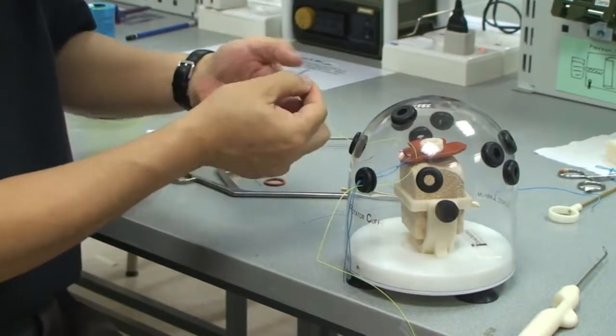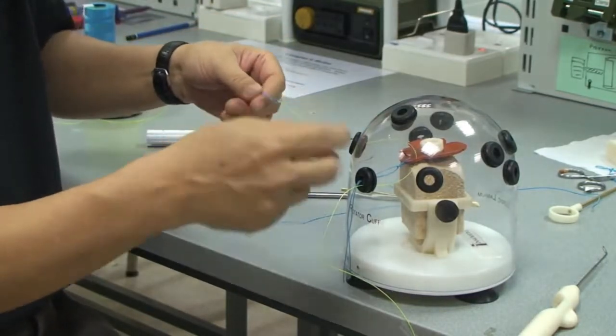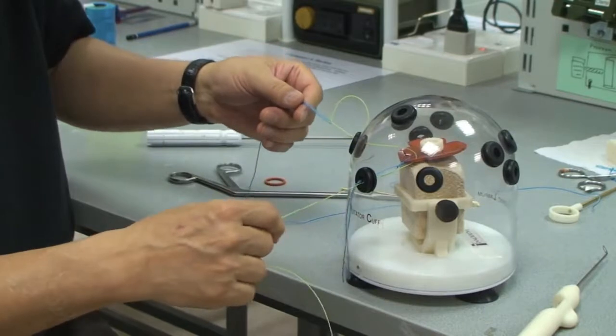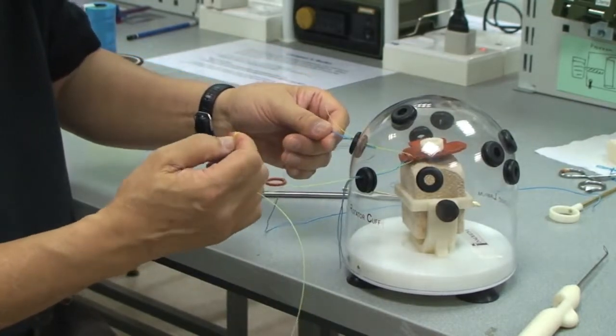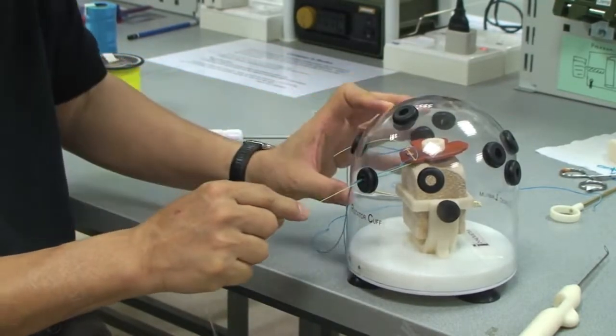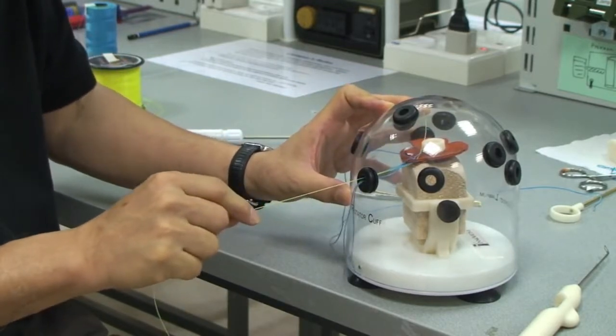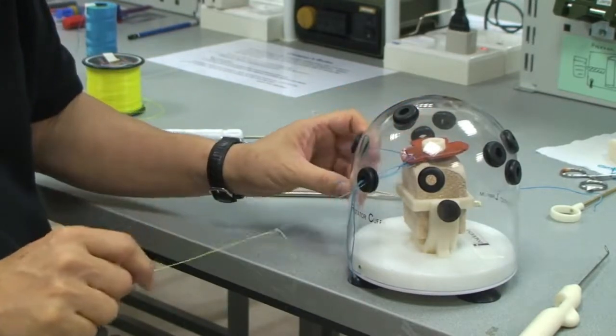All I have to do is to grab both limbs and then I pull it through the rotator cuff. And this will go through the cuff and then comes out to the other side.